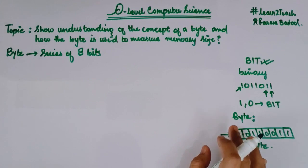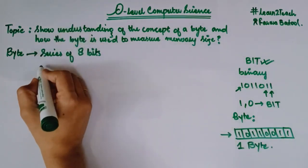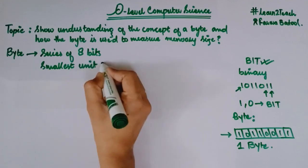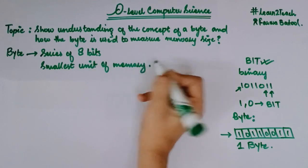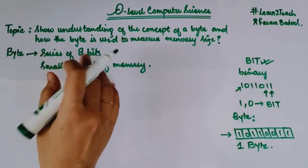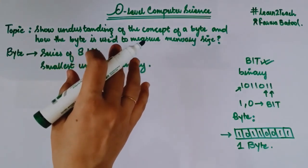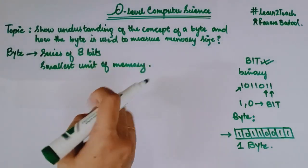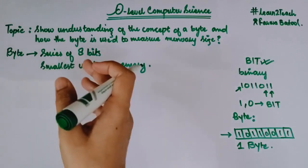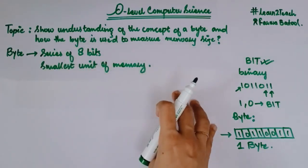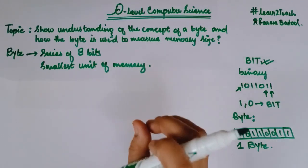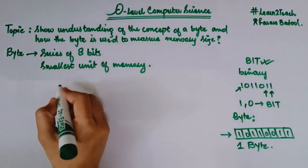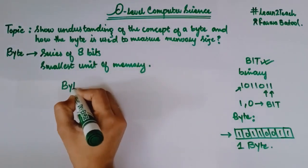I hope you got an understanding of byte. Now, in terms of memory, the smallest unit of memory is known as a byte. So in terms of memory size, if I need to measure a memory size, I can say that a byte is the smallest unit of memory, and it contains 8 bits. All the other units of memory are a multiple of byte.